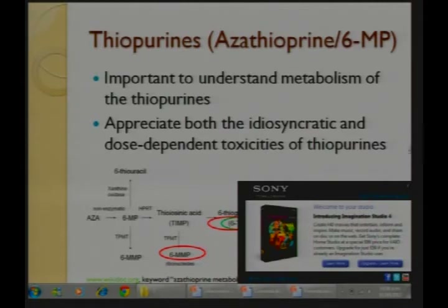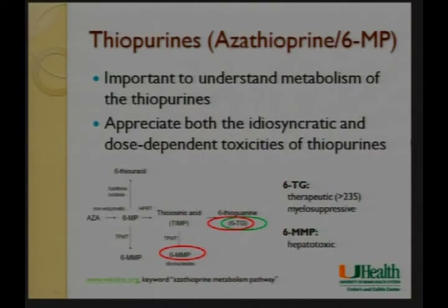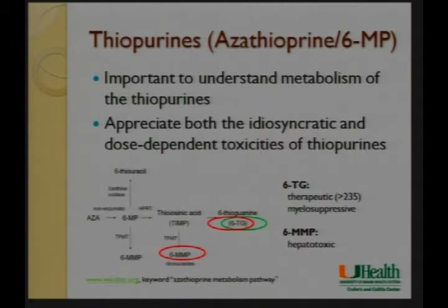The two major thiopurines are azathioprine and 6-mercaptopurine. Understanding the basic metabolic pathways is very important — it helps explain side effects and how we can circumvent them. There are two types of drug reactions: idiosyncratic reactions that happen independent of dose or timing, and dose-dependent toxicities that occur as certain metabolites accumulate. For thiopurines, both exist: pancreatitis and fever are idiosyncratic, while myelosuppression and hepatotoxicity are dose-dependent.